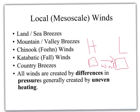Each one of these, in some cases, is a pair of winds. For instance, we have a land breeze and a sea breeze — one occurs during the day and one occurs at night. A hint: land breezes come from the land towards the sea, sea breezes come from the sea towards the land, mountain breezes come from the mountain towards the valley, and valley breezes come from the valley towards the mountain. These pairs of winds go together.